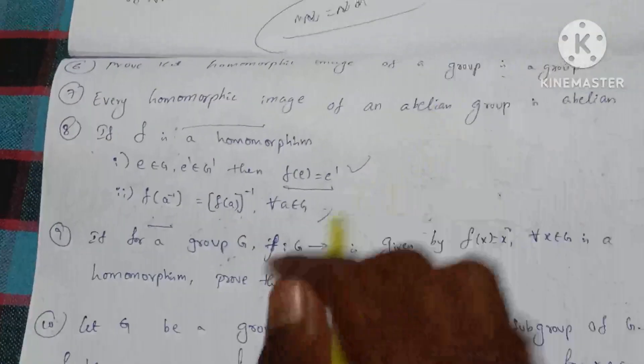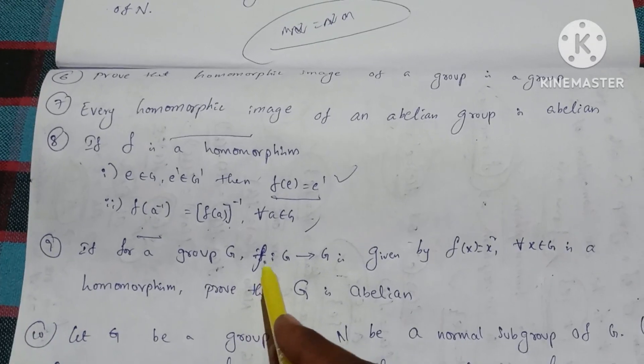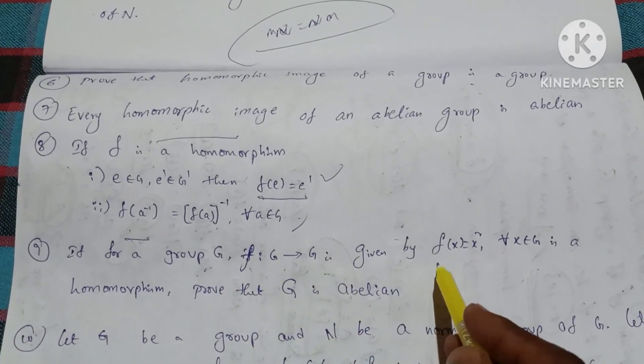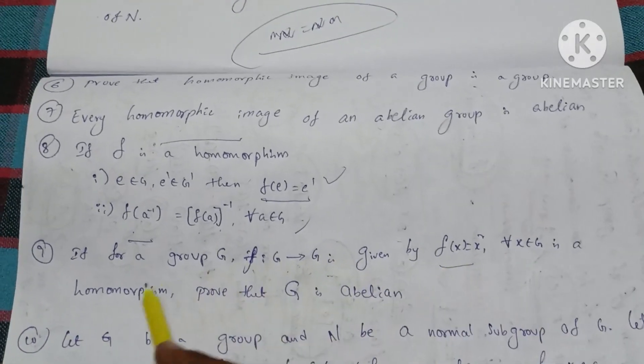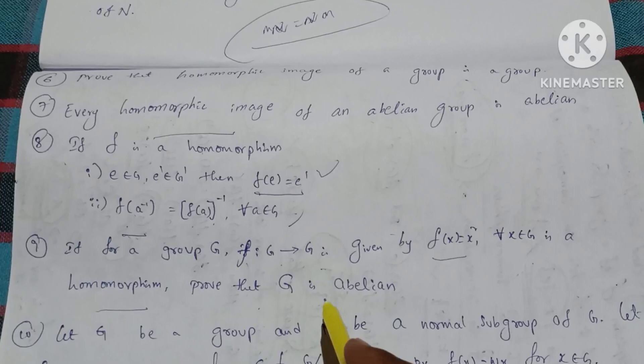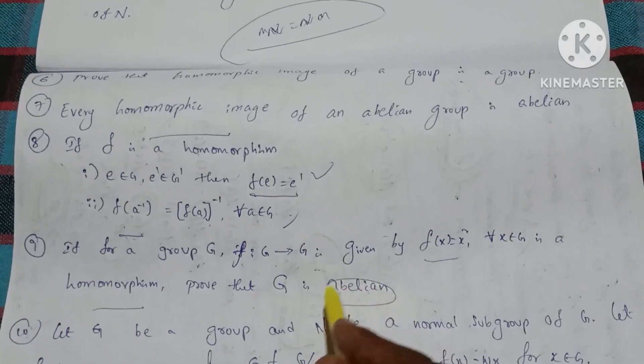Ninth question: For a group G, if F from G to G is given by F of X equal to X squared is a homomorphism, prove that G is abelian.